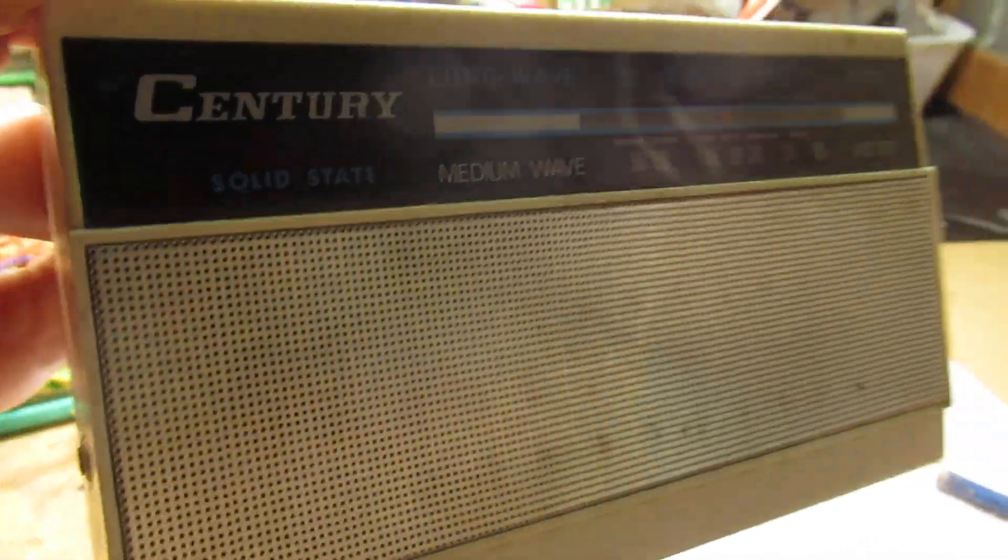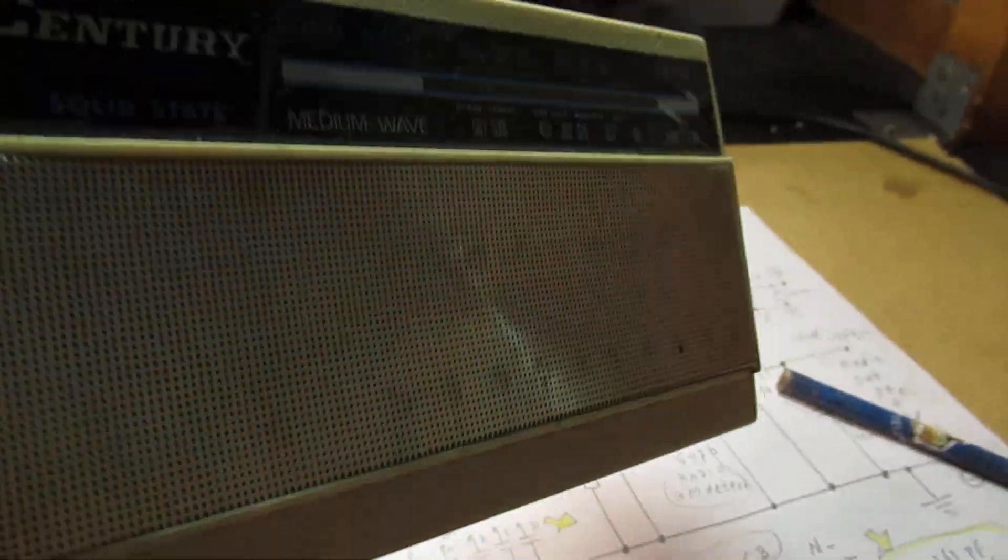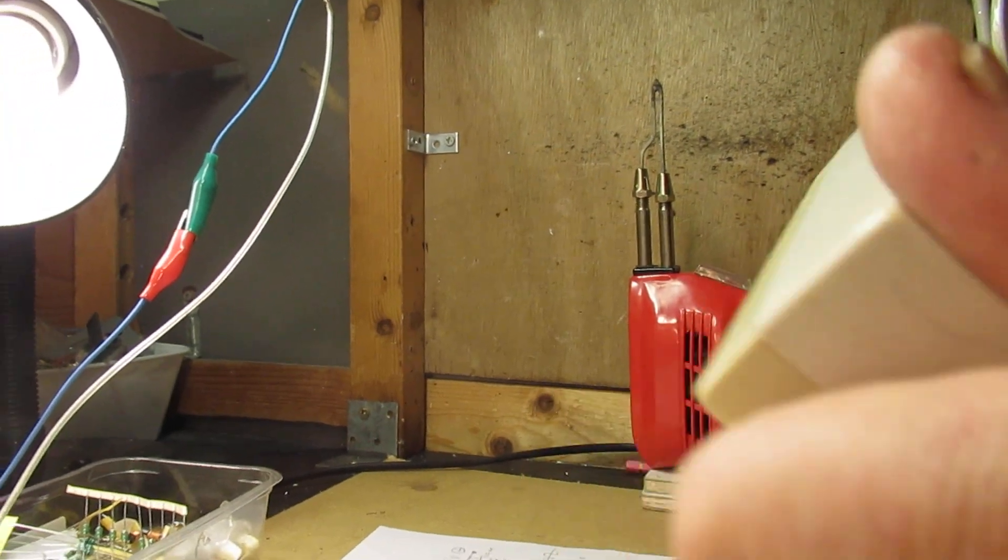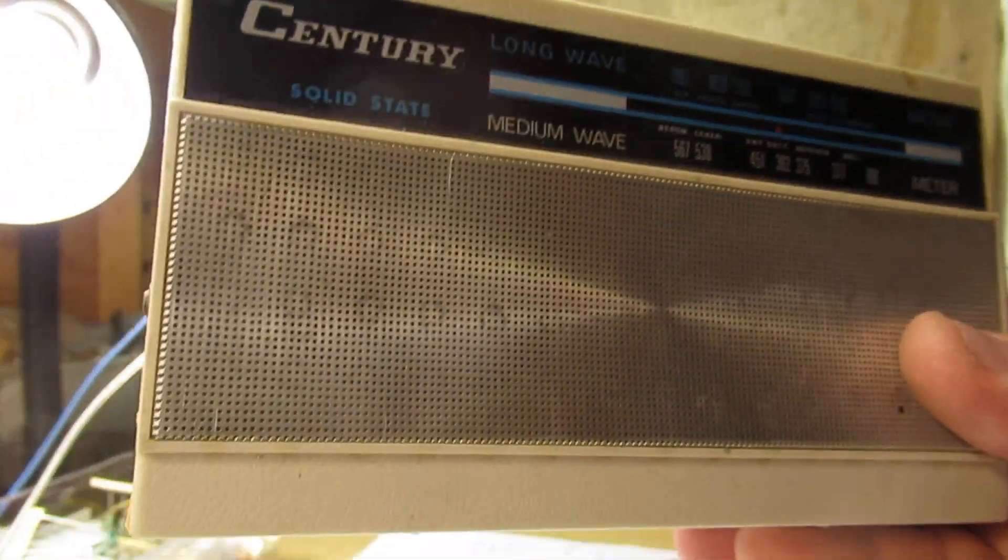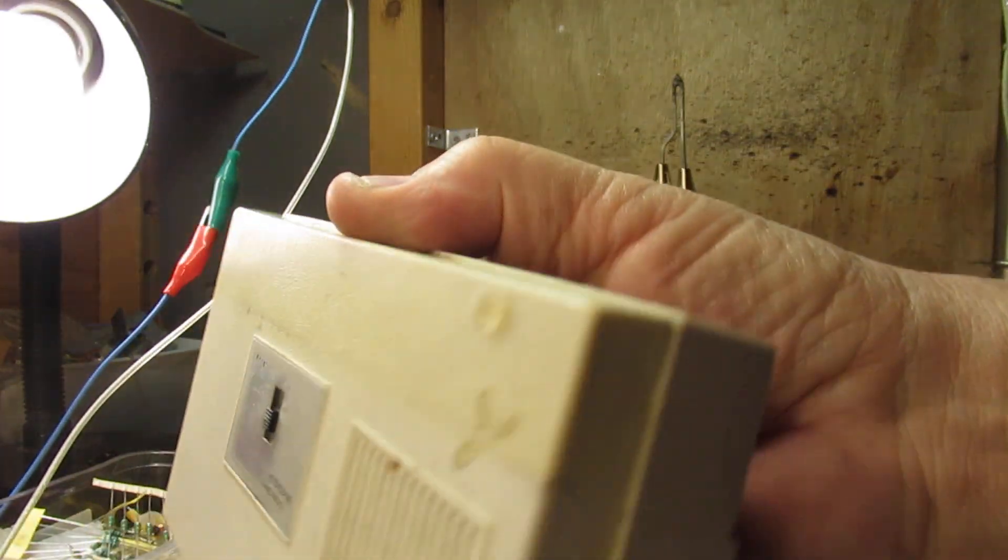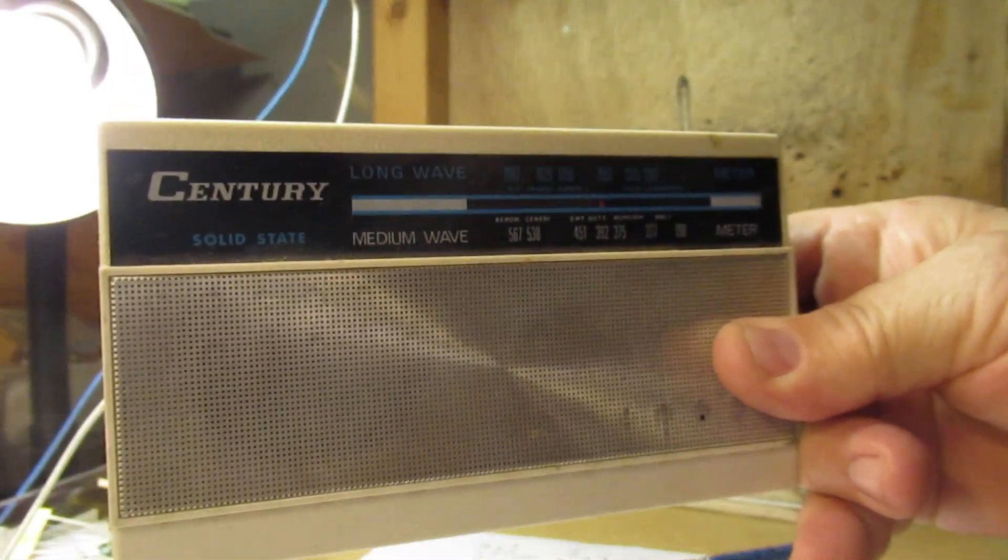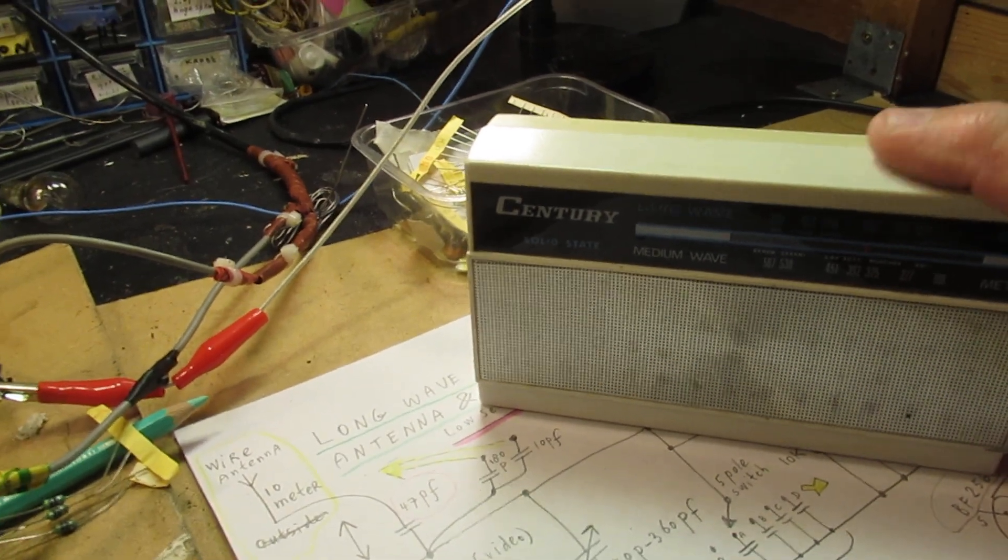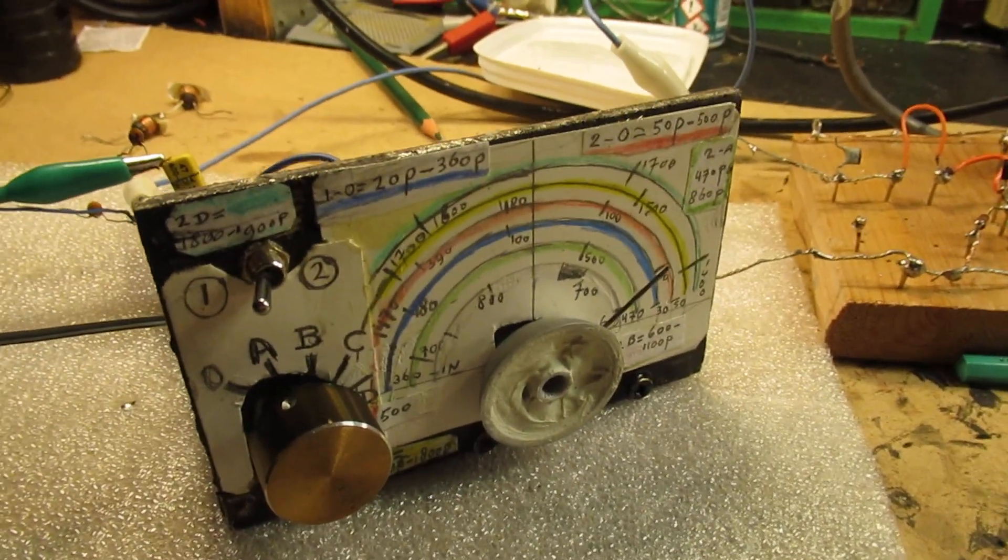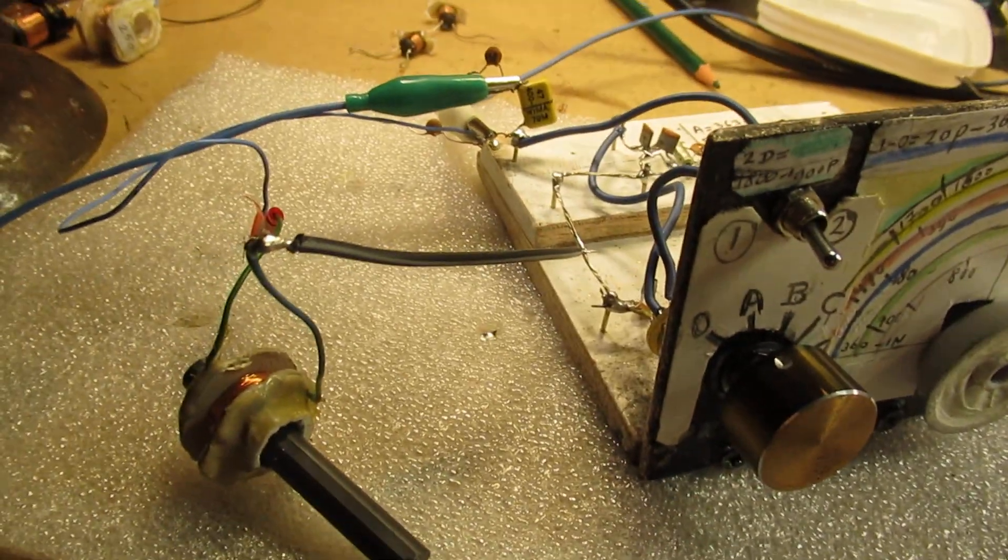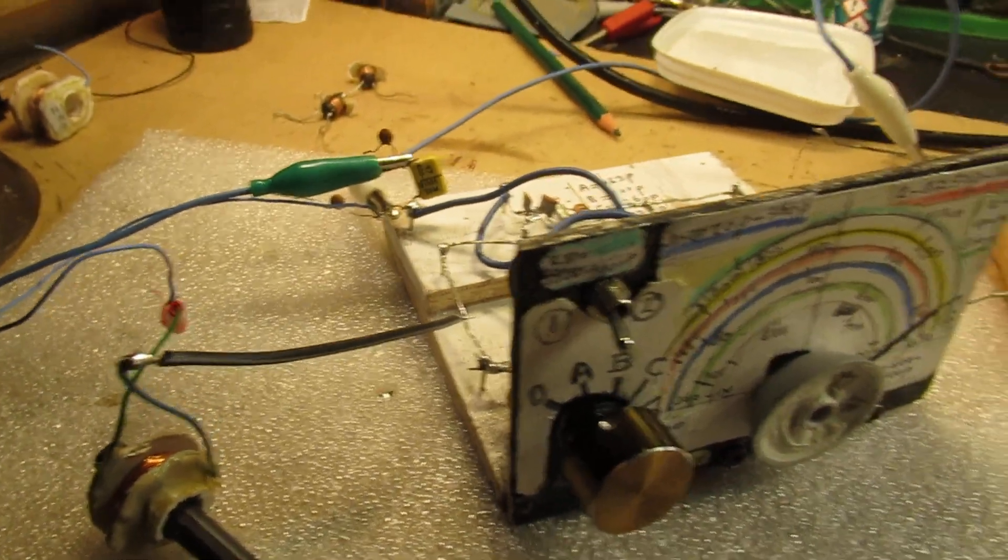It's sensitive to the position. Perhaps this video gets too long, but anyway, here we have a weak reception, and now we have a better reception because the ferrite antenna here inside is direction sensitive. With my homebrew long wave radio, it's not direction sensitive because we use here a wire antenna, completely a wire antenna.